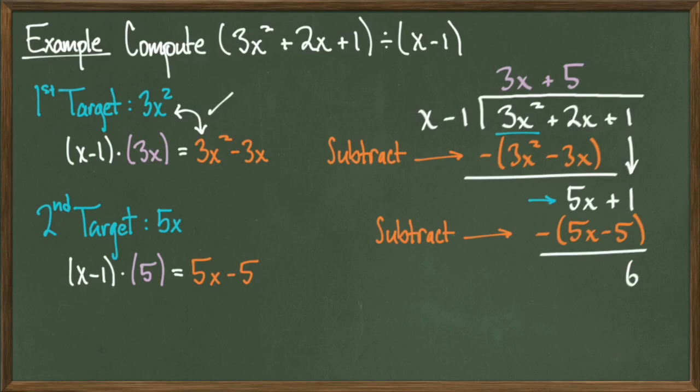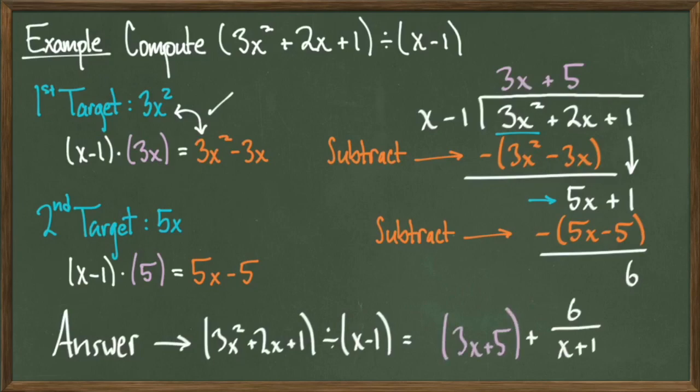The only step that remains is to compile our results. So 3x plus 5 is our quotient, and 6 at the bottom is our remainder. Therefore we're going to get a final answer of 3x squared plus 2x plus 1 divided by x minus 1 is equal to 3x plus 5 plus 6 divided by x minus 1.